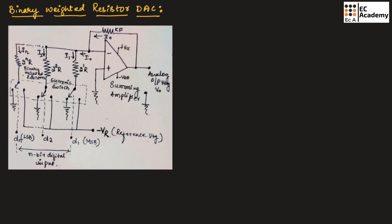For example, for a 3-bit digital to analog converter, we can use 3 resistors. This circuit is designed for an n-bit binary number. That is why we are having the value up to 2 to the power of nR.